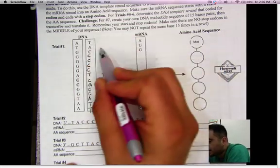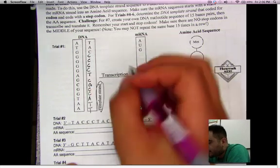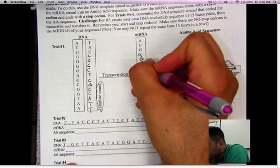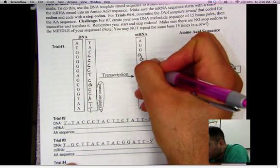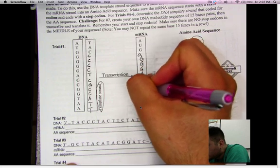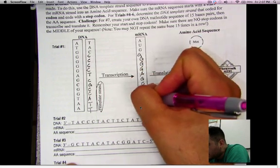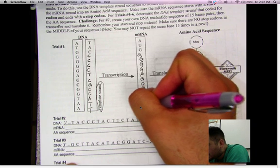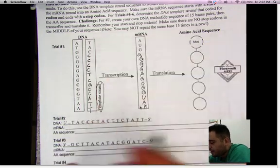So T goes with A, A goes with U, C goes with G. [Continues transcribing the sequence to get mRNA: A, G, C, G, G, U, A, A]. Okay.